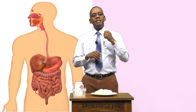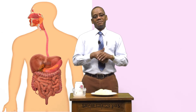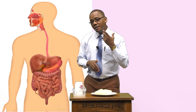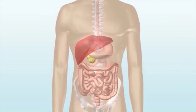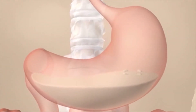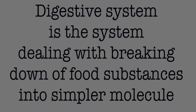The parts involved in the digestion make a system called the digestive system. It is the digestive system — the system dealing with the breaking down of food substances into simpler molecules.